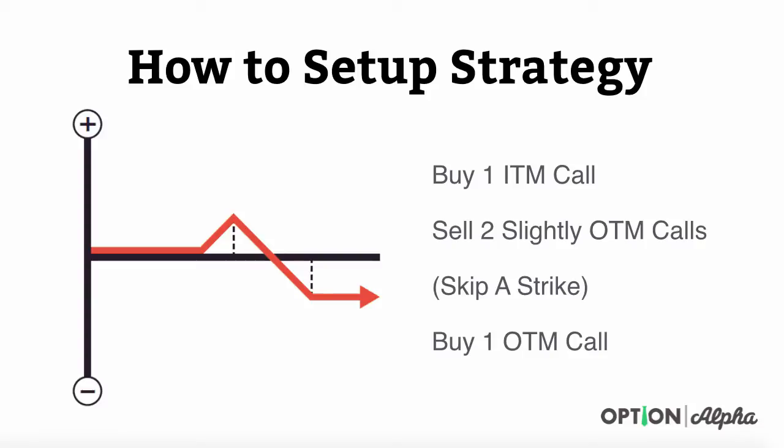Here's exactly how you would set up this strategy. The first thing you're going to do is buy one in the money call, very close to where the stock is trading. The next thing is to go to the next strike up and sell two slightly out of the money calls. It's important that we pin these out of the money calls just above where the stock is trading to maximize the extrinsic value available in those options. Then we're going to skip over a strike and go out to the next strike and buy one out of the money call. This is where this strategy gets its feature by skipping over that strike and not making it an even or balanced butterfly.